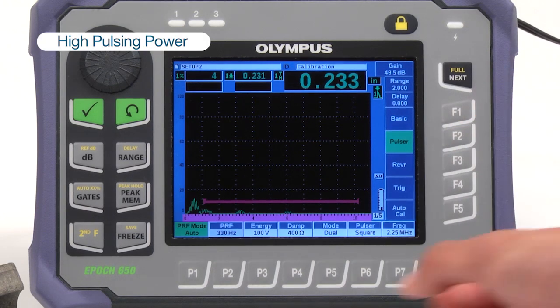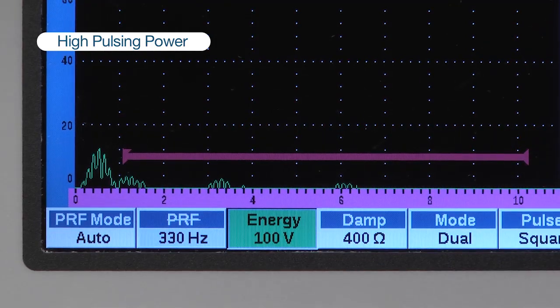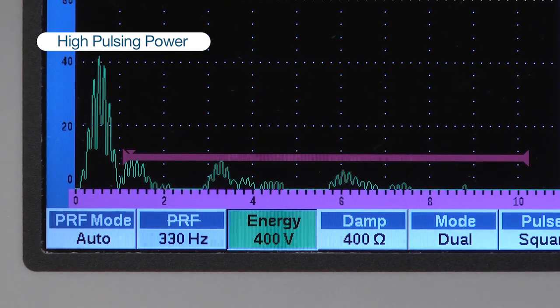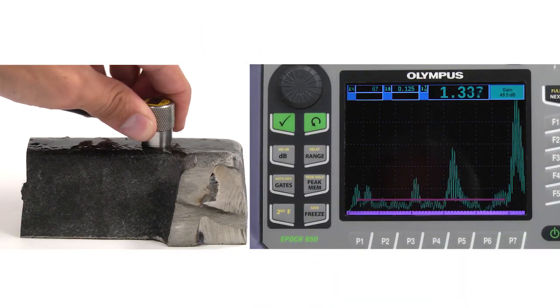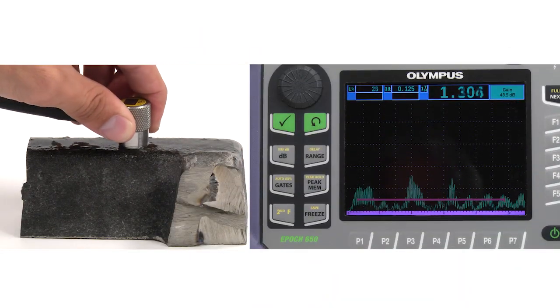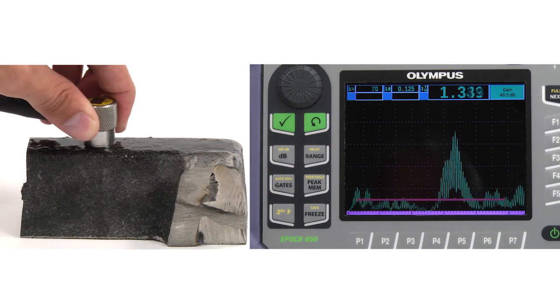High pulsing power can be used to increase sound penetration into the sample. We can detect our production flaws by looking for echoes occurring before the backwell echo on our live A-scan display. Larger flaws will generate larger amplitude echoes.